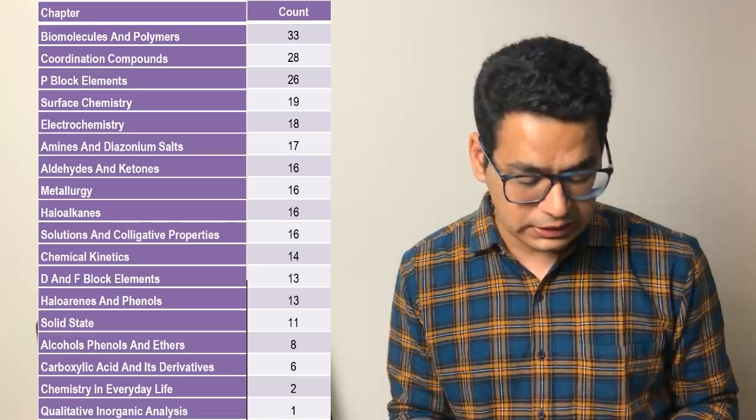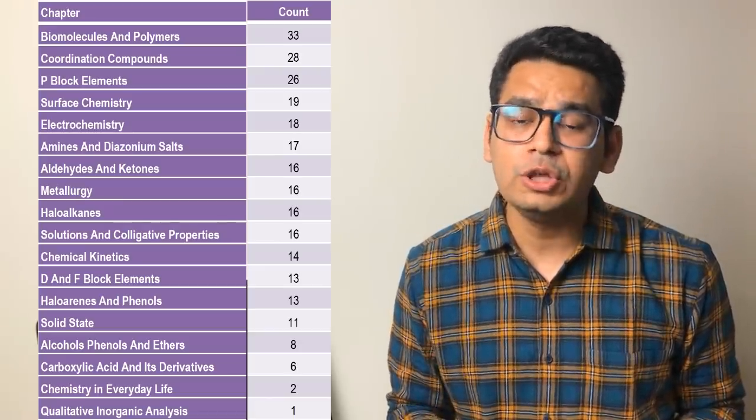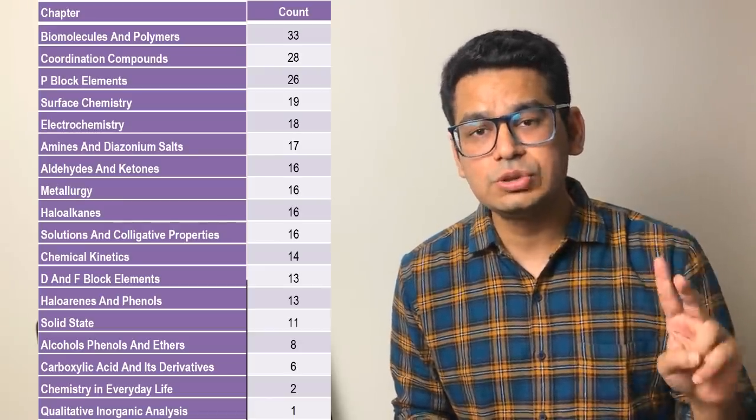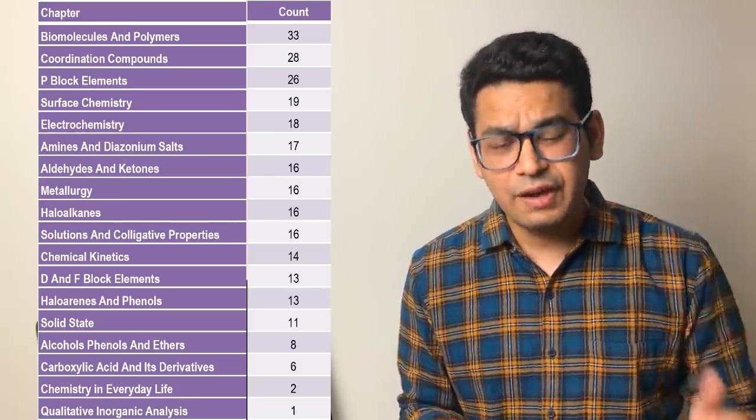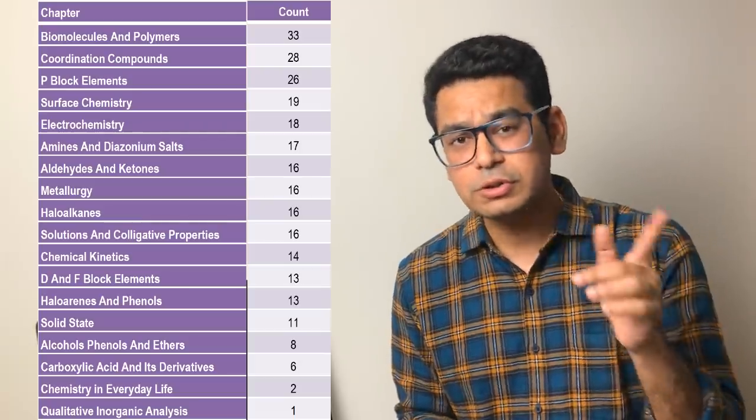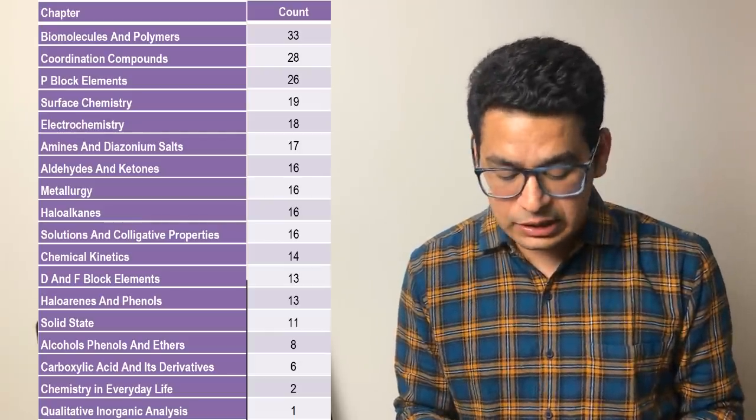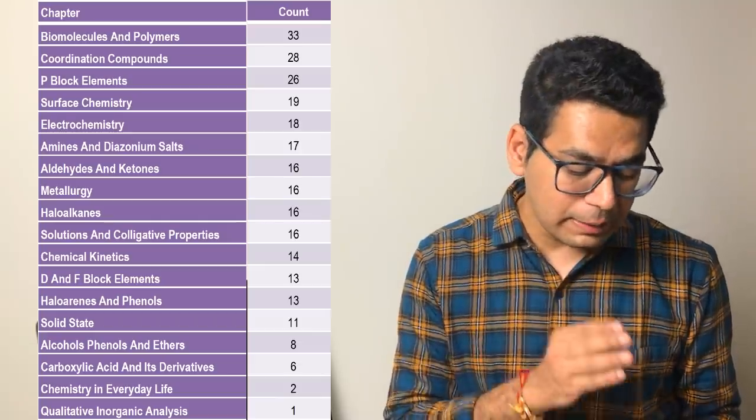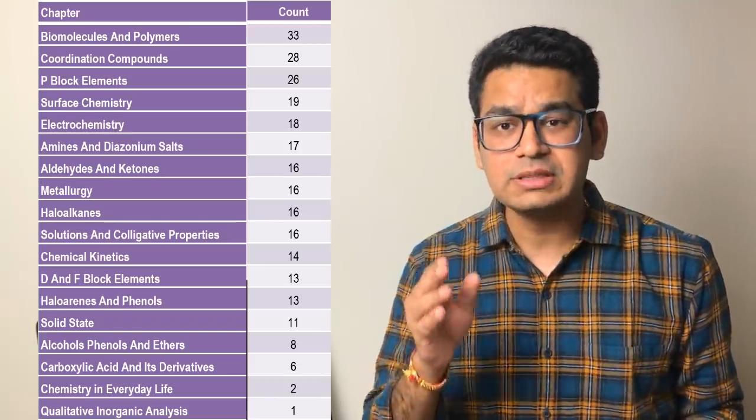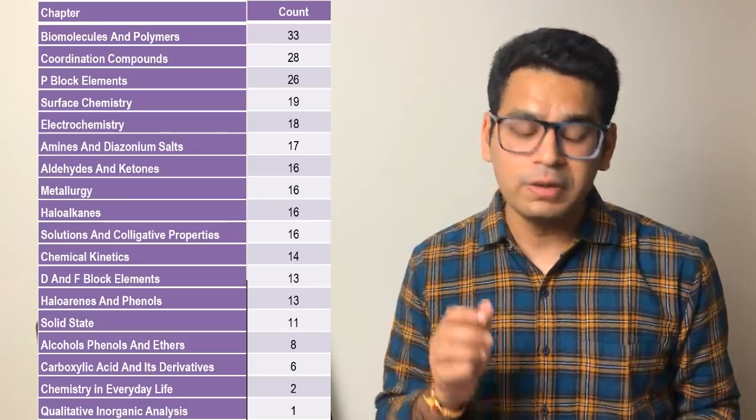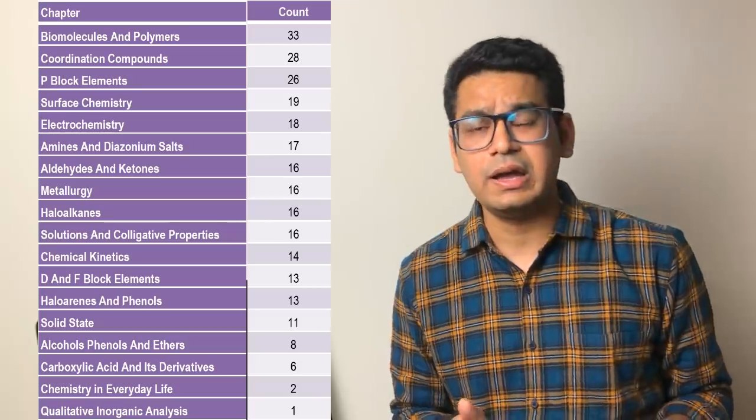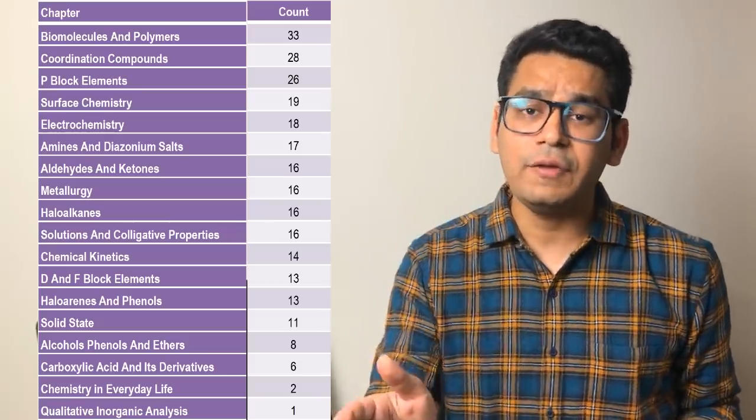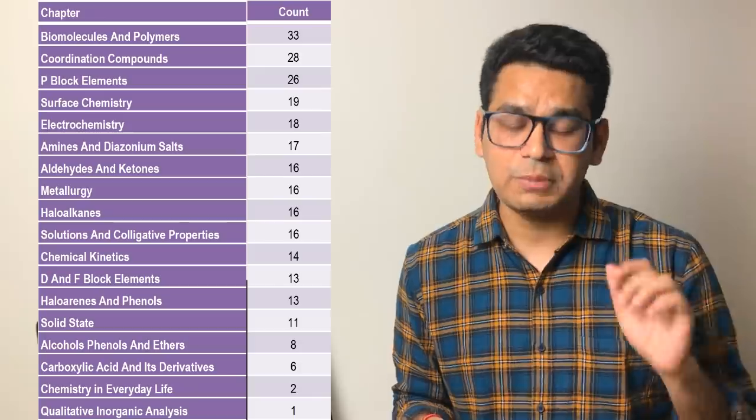Let's go to class 12th. If we talk about class 12th, then the most important chapter, again which we don't expect, is biomolecules and polymers. 33 questions came from these two chapters, which generally we are not aware of. The average difficulty as compared to the 11th chapter is a little bit more. But still, 3.7 difficulty parameter, 33 questions. That means more than 2. If we divide by 16, the probability is 1 question biomolecules and 1 question polymers, despite the fact that 25 questions will come this time in JEE Mains now.